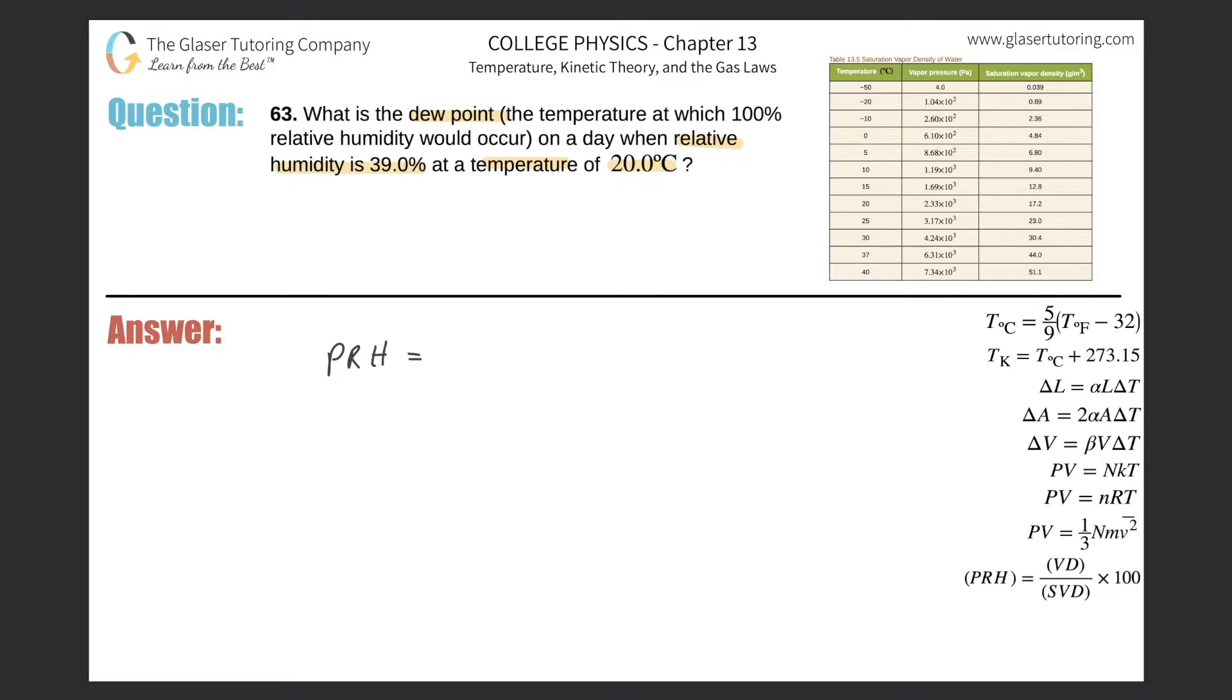It says that the percent relative humidity will equal, I have volume stuck in my head but it's not volume, vapor density, divided by the saturation vapor density, multiplied by 100. Given the conditions, if you know that the relative humidity is 39% and you know the temperature is 20 degrees Celsius, what can we find?